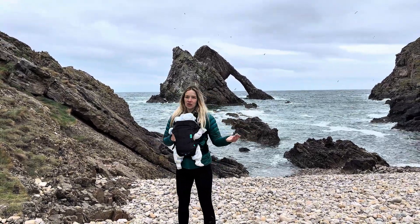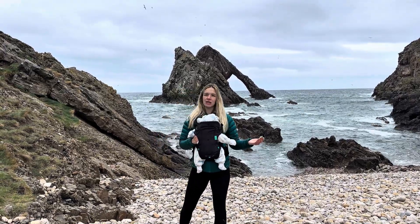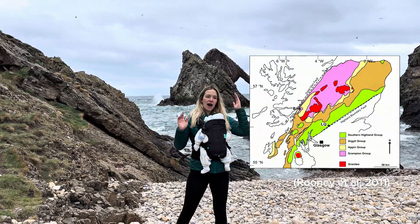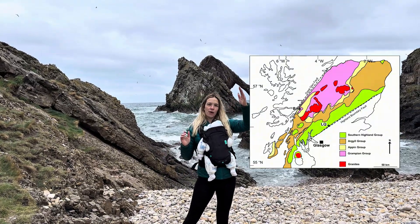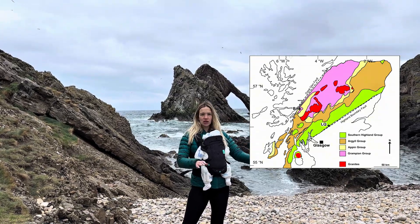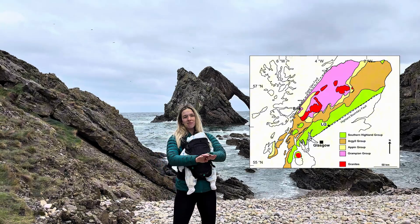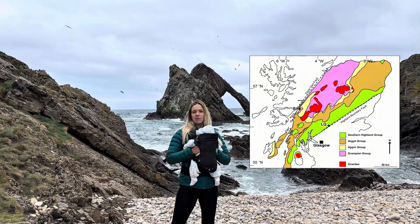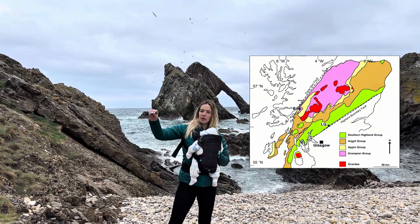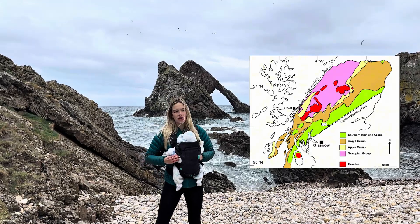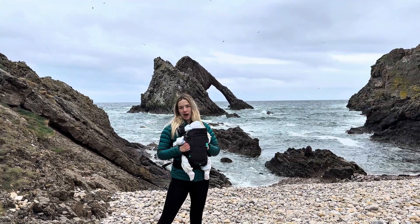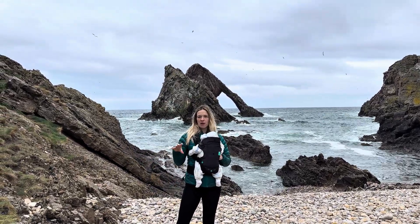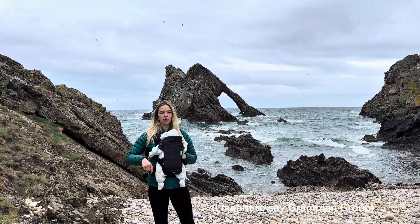The quartzite in this area is part of the Dalradian Supergroup, which is found in the central Highlands terrain in Scotland. To the north of it, you have the Great Glen Fault, which runs from Inverness all the way down to Fort William — a straight slip fault that moved throughout geological time during the Caledonian Orogeny. To the south, the Highland Boundary Fault Line runs from Stonehaven all the way through to Helensburgh and across to Arran. That's the Grampian terrain, or the central Highlands terrain.